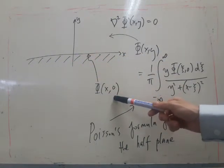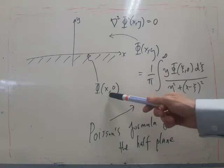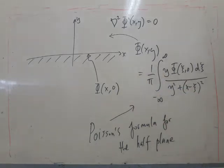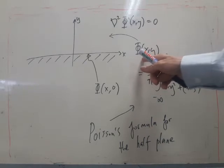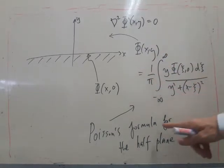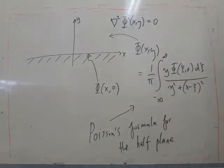So we're given phi of x, phi of x when y equals zero. Then there's actually a formula which gives phi of x,y, which is this, and it's known as Poisson's formula for the half plane.